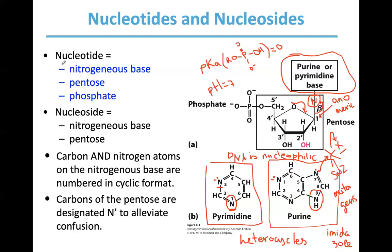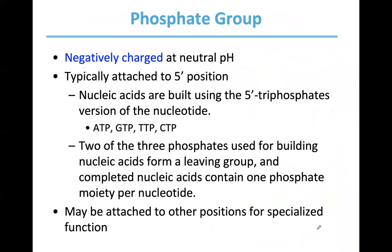The difference between a nucleotide and a nucleoside is simple: a nucleoside is the molecule without the phosphate — just the base and the ribose. The phosphate group, negatively charged, is typically attached to the 5' position. Nucleic acids are built using triphosphate versions of the nucleotides.